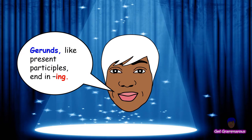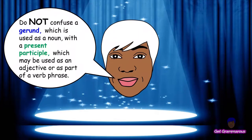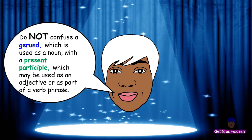Gerunds, like present participles, end in -ing. Do not confuse a gerund, which is used as a noun, with a present participle, which may be used as an adjective or as part of a verb phrase.